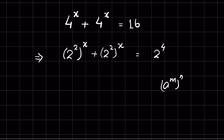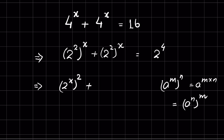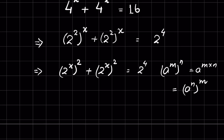Using the identity: a raised to the power m, whole raised to the power n, equals a raised to the power m times n — which can also be written as a raised to the power n whole raised to the power m — we rewrite the expression as: 2 raised to the power x whole raised to the power 2, plus 2 raised to the power x whole raised to the power 2, equals 2 raised to the power 4.